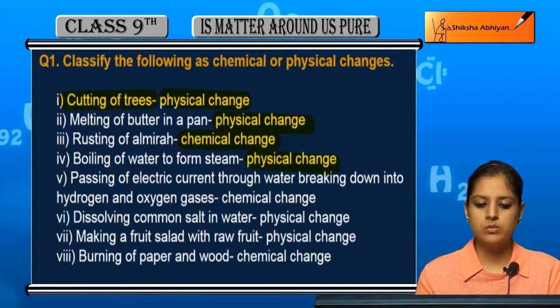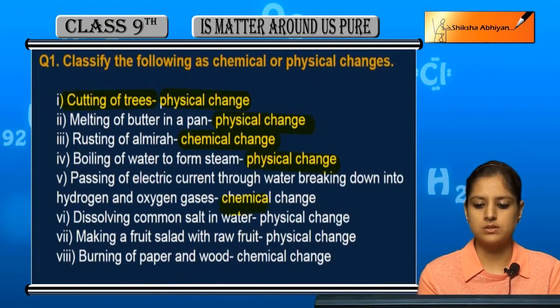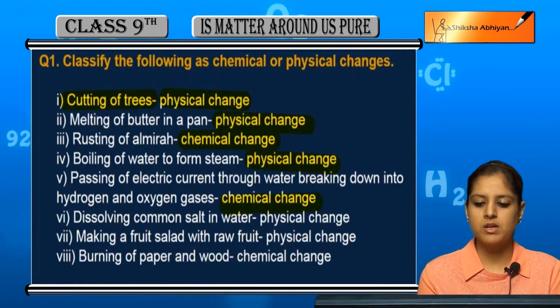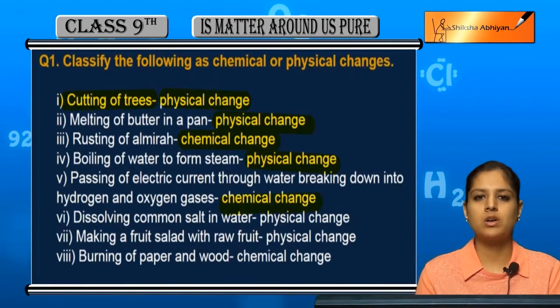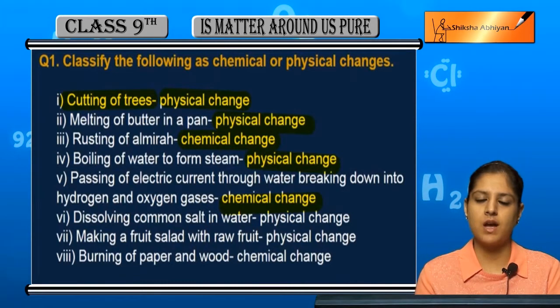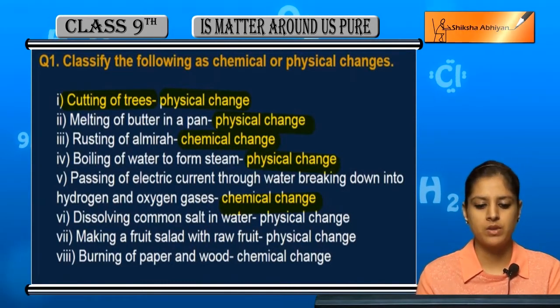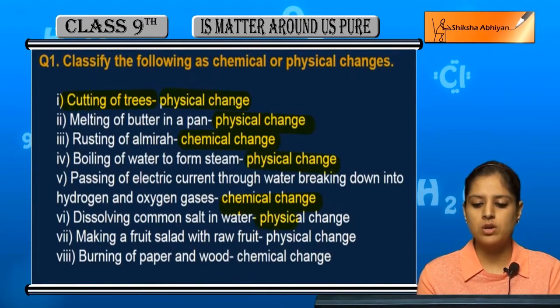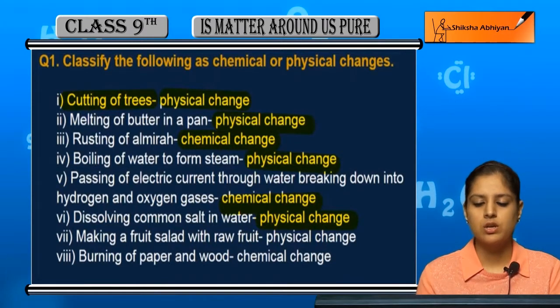Passing electric current through water breaks it down into hydrogen and oxygen gases — it is a chemical change because water is broken into two different substances, hydrogen and oxygen.